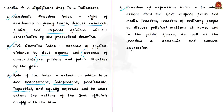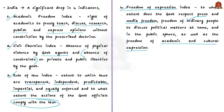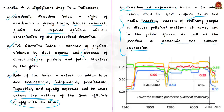Rule of law also means to what extent the actions of government officials comply with the law. Freedom of expression means to what extent the government respects press and media freedom, the freedom of ordinary people to discuss political matters at home and in the public sphere, as well as respect for academic and cultural expression. Unfortunately, India has registered a low score in these indicators, and these four indicators have seen a critical decline — the levels of academic freedom and civil liberties even declined worse than in the emergency period.